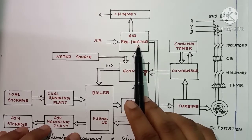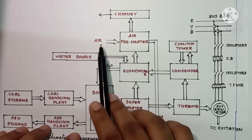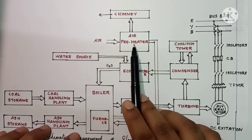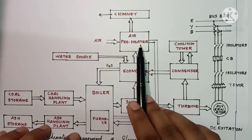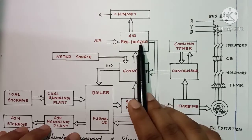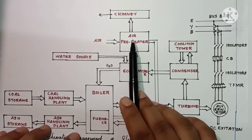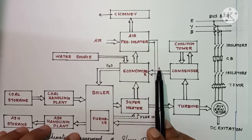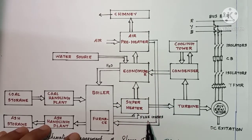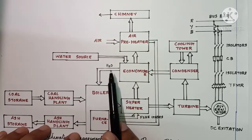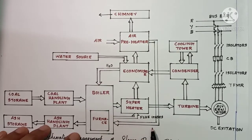During the movement of flue gases through the air preheater, their heat energy is absorbed by the air preheater. The incoming atmospheric air gets heated using this energy, and this hot air then flows to the boiler.